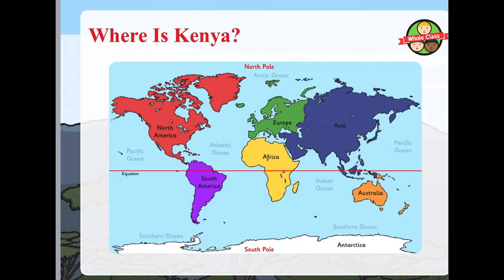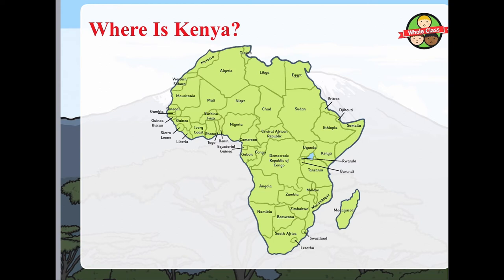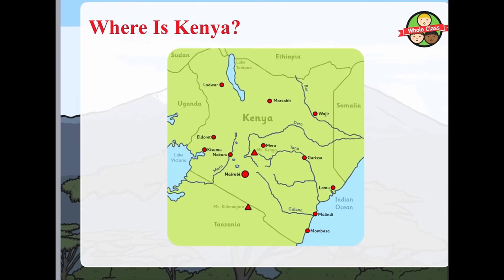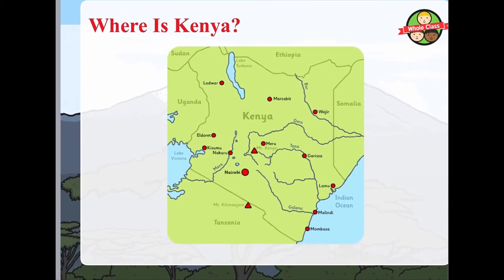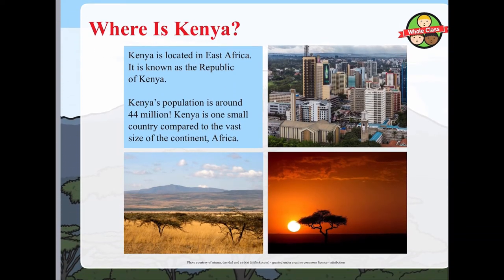If we look back at the world map, you can see the continent of Africa there in yellow. There is a map of Kenya itself, and you can see a lake quite near to Kenya on the east side. Kenya is located in east Africa and it's known as the Republic of Kenya. Its population - that means how many people live there - is around 44 million. Kenya is one small country compared to the vast size of the continent of Africa.